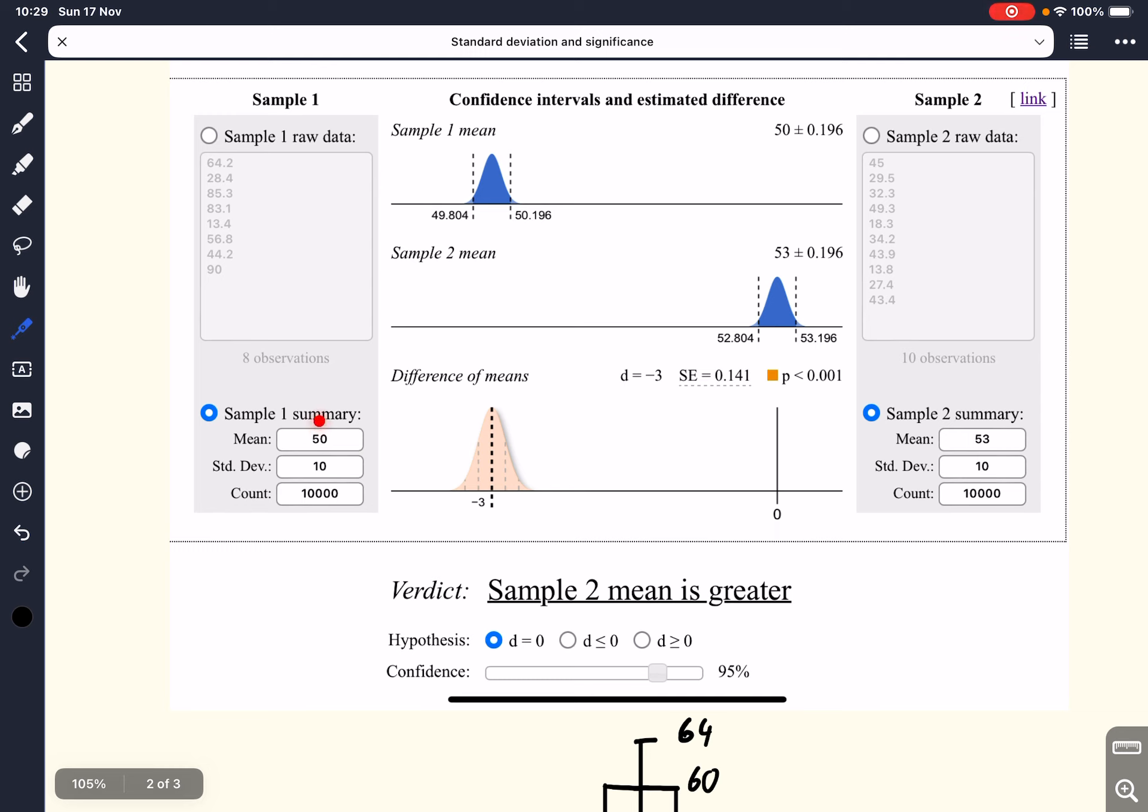And if we go to a two-sample t-test, we can actually put in our numbers. So for sample one, the summary, we had 50 mean, 10 standard deviation, and a sample size of 10,000. And for sample two, we had 53, 10, and 10,000. And we let the calculator do the calculation.